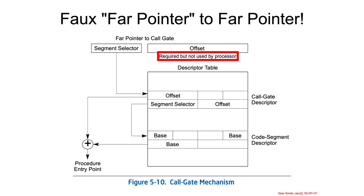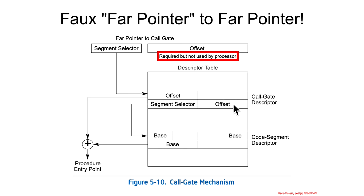Let's see some different ways we can visualize that. Intel has this picture, which shows you have a call of a far pointer to a call gate. This far pointer is a segment selector and an offset, but this offset is not actually used by the processor. So I call this a faux far pointer — it is a fake far pointer. You have to put an offset, but it's not actually going to be used. Instead, the call instruction is mostly just using this segment selector behind the scenes, selecting a call gate descriptor from the GDT or LDT.